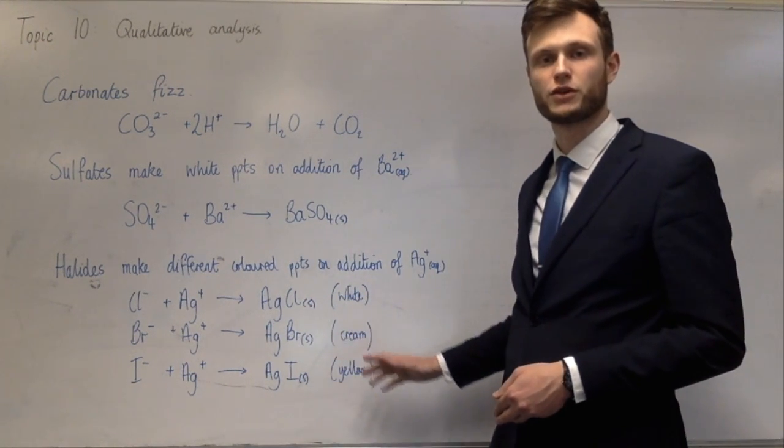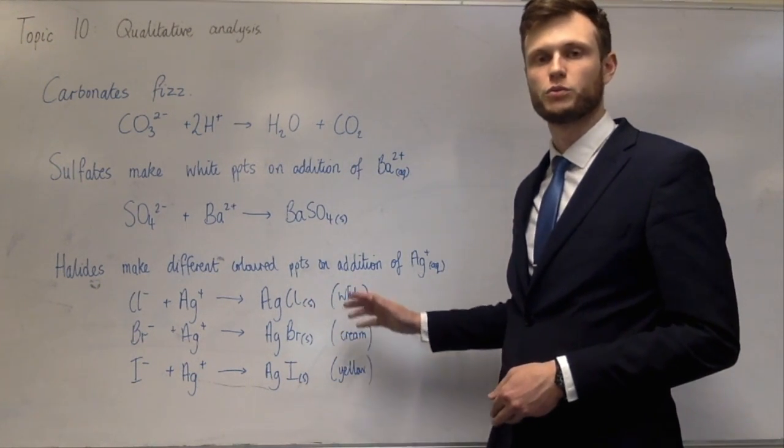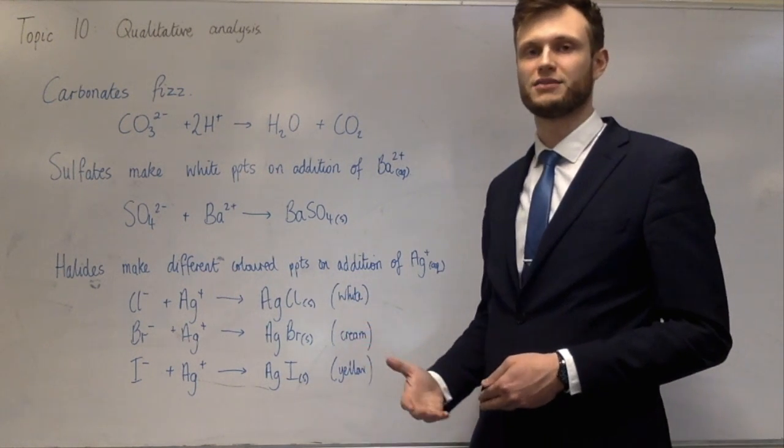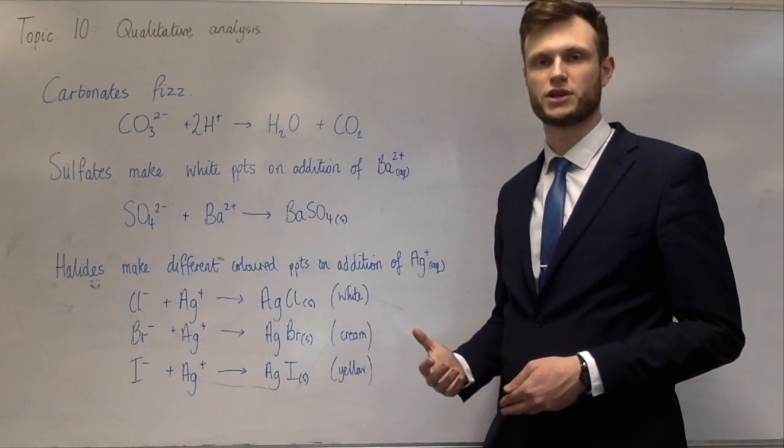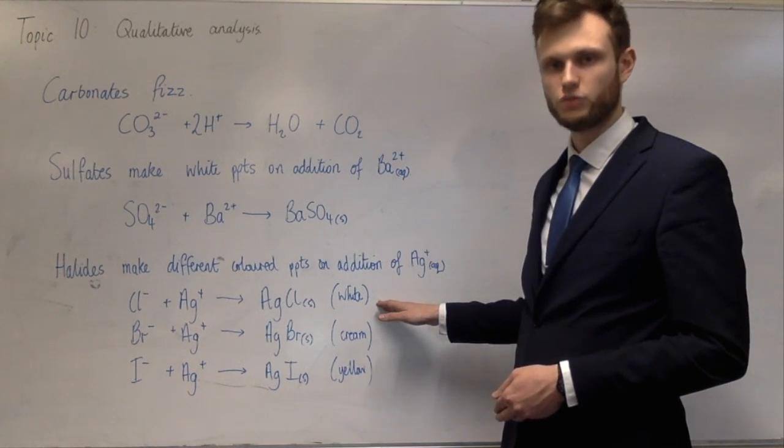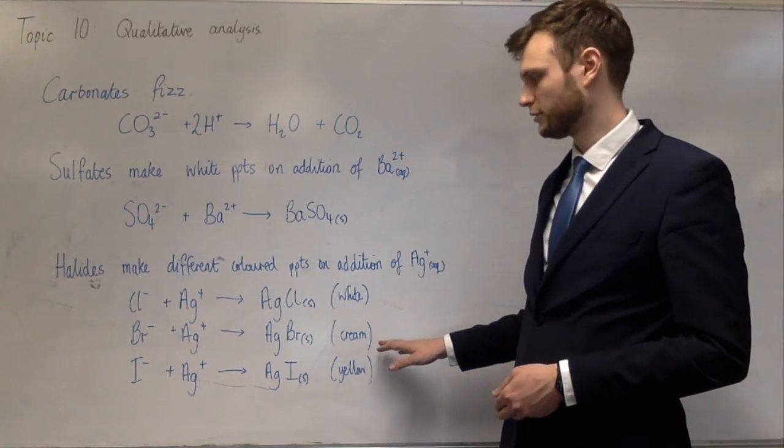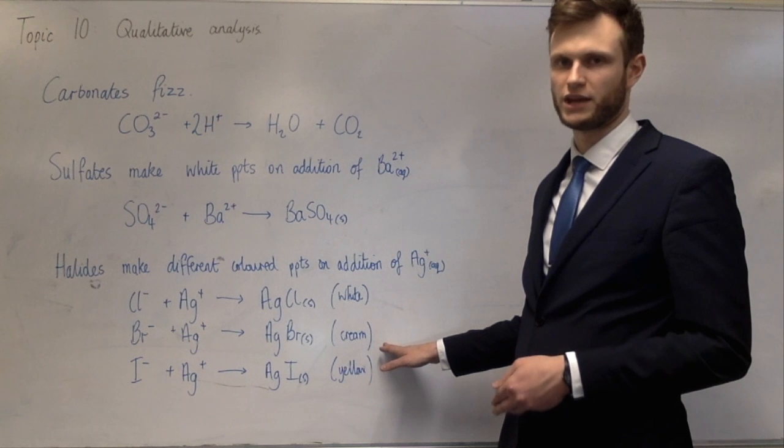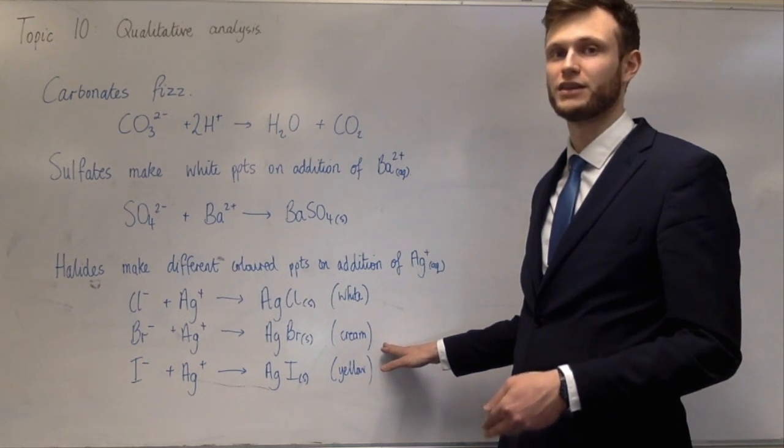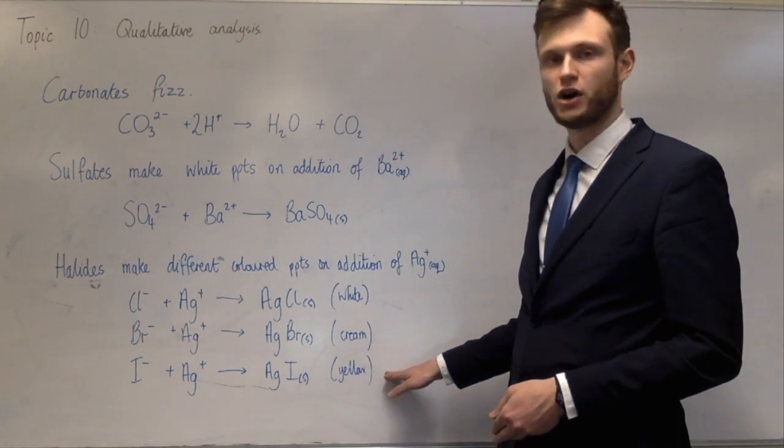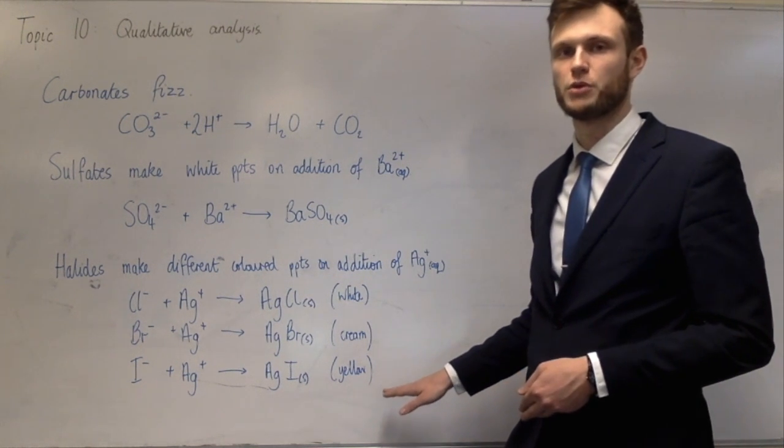If you can't tell the difference between the cream and the yellow, or between the white and the cream, you can test using different concentrations of ammonia. Silver chloride will dissolve in aqueous ammonia. Silver bromide won't dissolve in aqueous ammonia, but it will dissolve in concentrated ammonia, and the iodide doesn't dissolve in any concentration of ammonia.